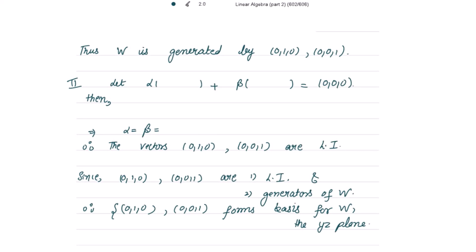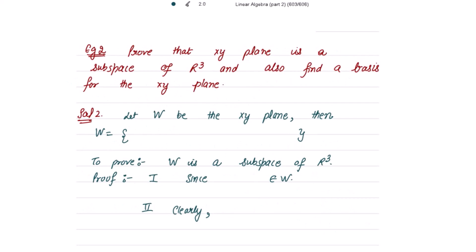Now we show the two vectors are linearly independent. Take alpha times (0,1,0) plus beta times (0,0,1) equal to (0,0,0). This gives (0, alpha, beta) = (0,0,0), so alpha equals beta equals 0. All scalars are zero, meaning the vectors are linearly independent. Since they are linearly independent and generate W, they form the basis for the YZ plane.